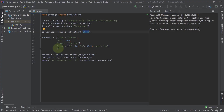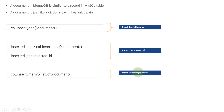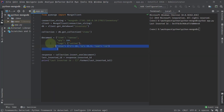Now let's look at inserting multiple documents. There can be a case where a bulk insert is needed — for example, an import feature inside your application where you insert more than one document at once. In that case, you need to use the insert_many method on the collection instance, and the parameter will be a list of documents.